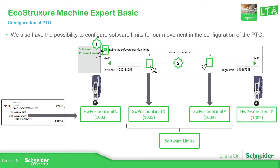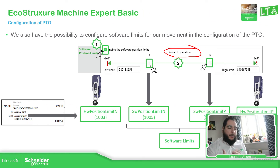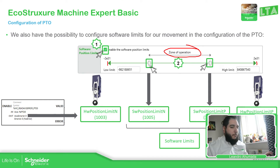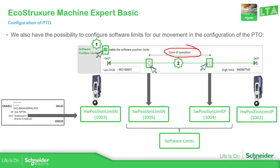The limits define the range that the axis can travel — this is the operation zone. Since we don't have direct feedback, the software counts the pulses being sent to the driver. By counting those pulses, the software can compare the actual position against the software limit switches to activate an error if the position reaches those configured values.